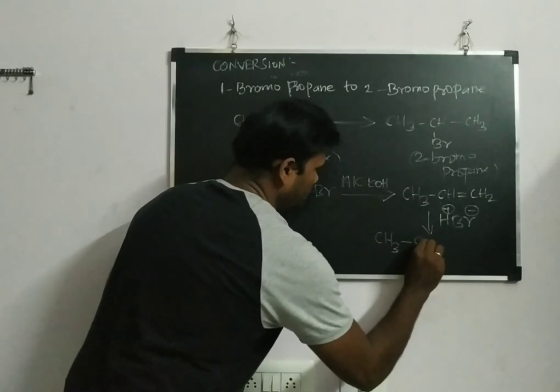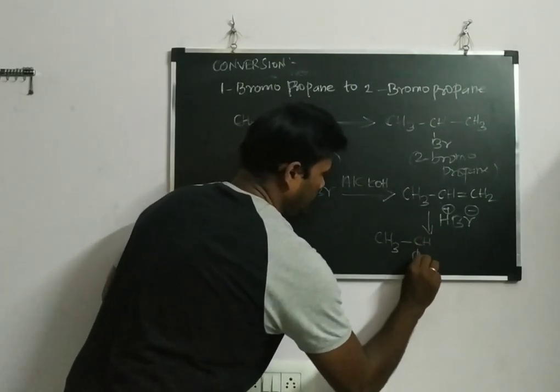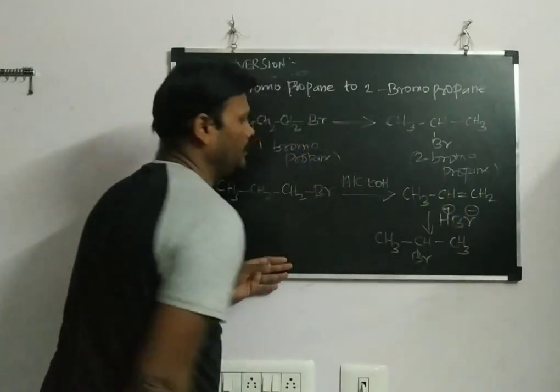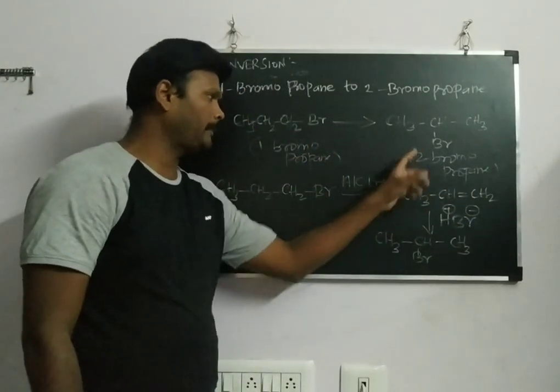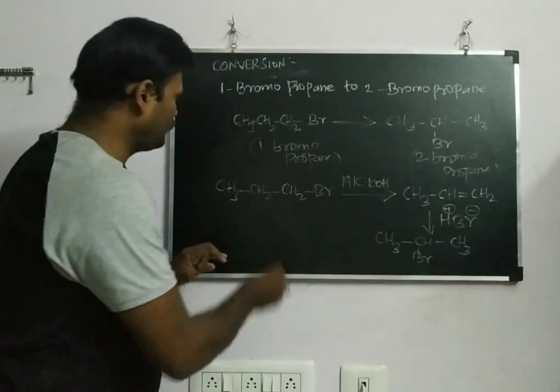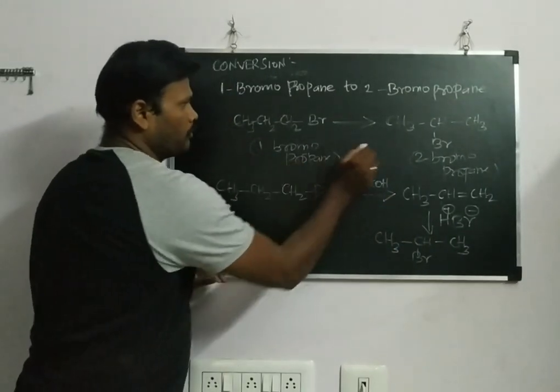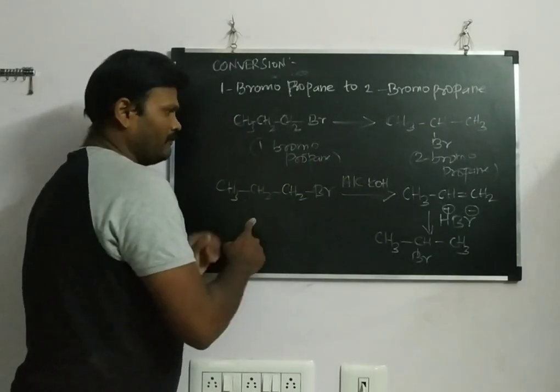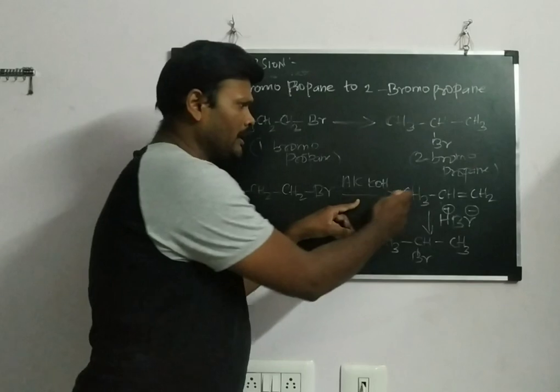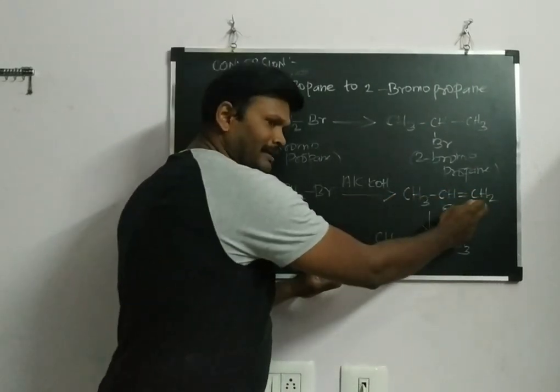CH3-CH(Br)-CH3. This is 2-bromopropane, what I am going to get. The product is 2-bromopropane. Here we converted that 1-bromopropane to 2-bromopropane by the way of using alcoholic KOH. If I use alcoholic KOH, it will be getting converted into propene, the alkene.